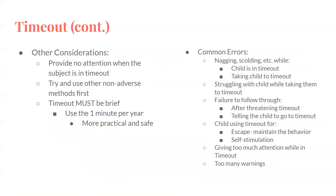Some other considerations: provide no attention to the subject while they are in timeout. Try non-aversive methods first, because punishment is usually the last resort. Timeout must be brief — use the one-minute-per-year rule, so if a child is five years old, use five minutes; if they are ten years old, use ten minutes. This makes the method more practical and safe.